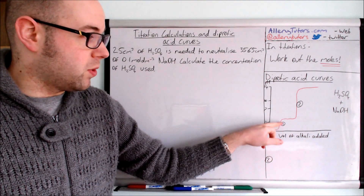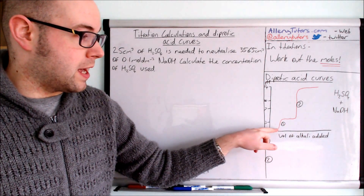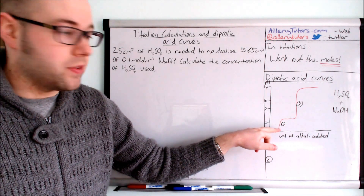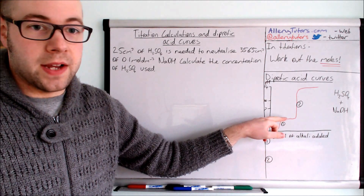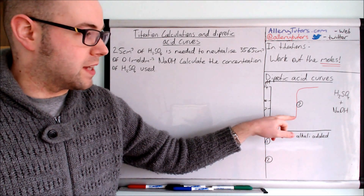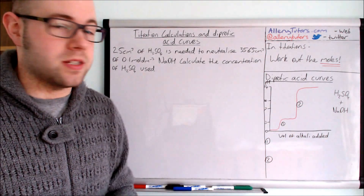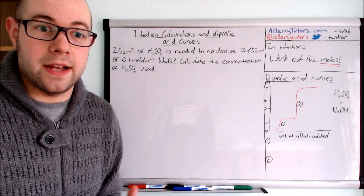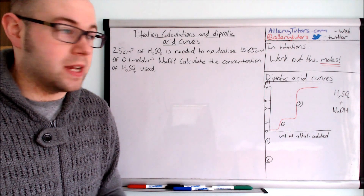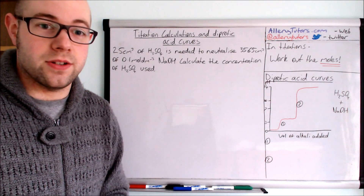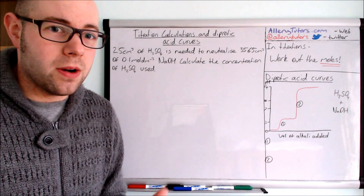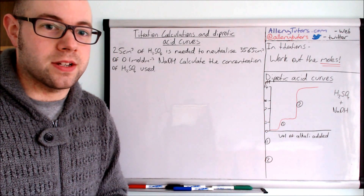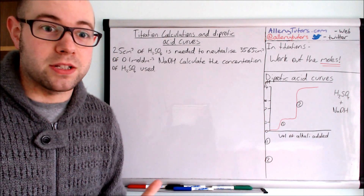We've got one small rise going from about pH one or a half to about pH 5, then it flattens out, and then we've got a really steep rise going up to pH 14, which is obviously the pH of a strong base — sodium hydroxide. So what's actually going on here? Why do we have two rises with this curve?